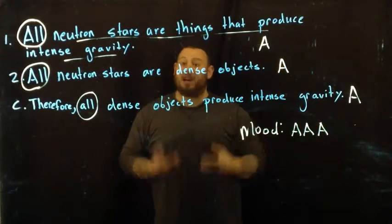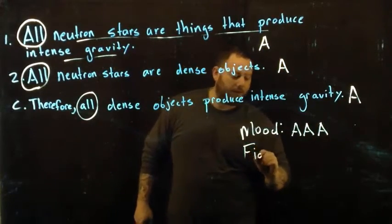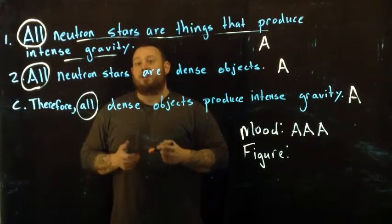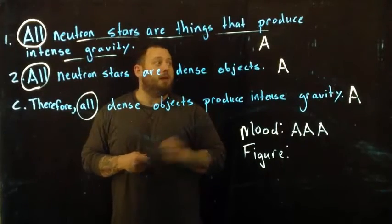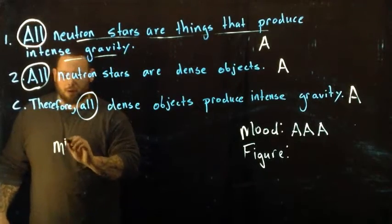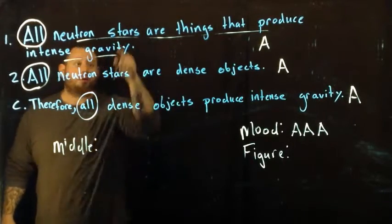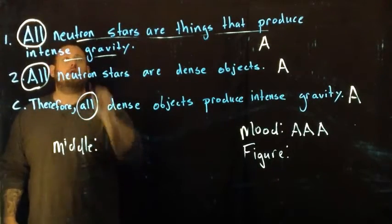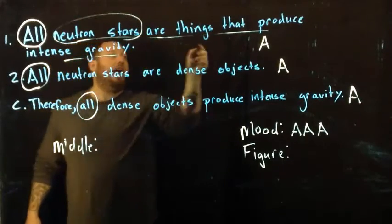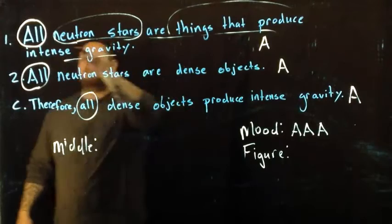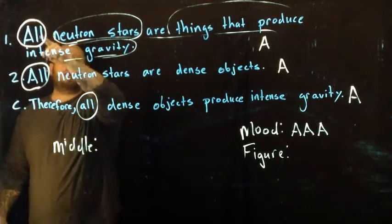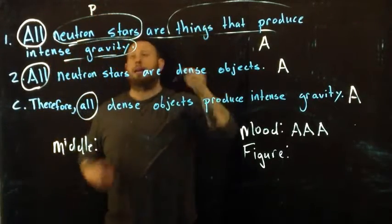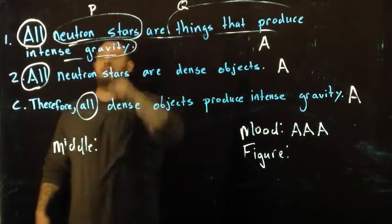Our next job is to figure out the figure of the statement. To determine the figure, we need to first determine our middle term. The middle term is the term that shows up in both premises but not the conclusion. The terms are going to be 'neutron stars' and 'things that produce intense gravity.' So all neutron stars — category neutron stars — are Q, where Q stands for things that produce intense gravity.